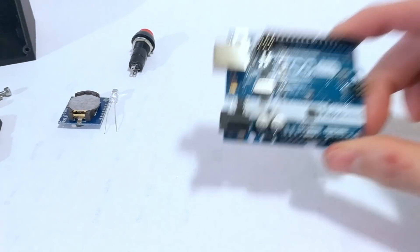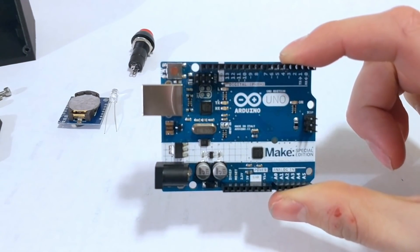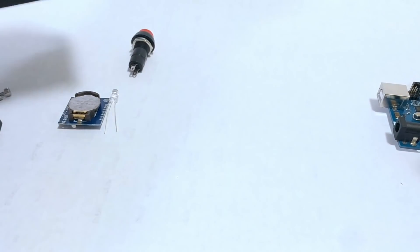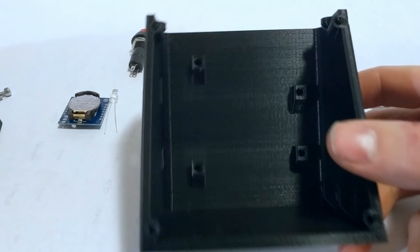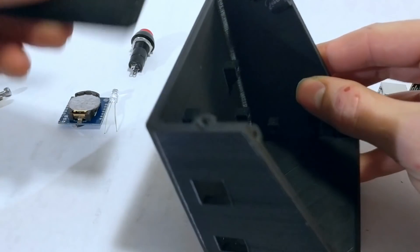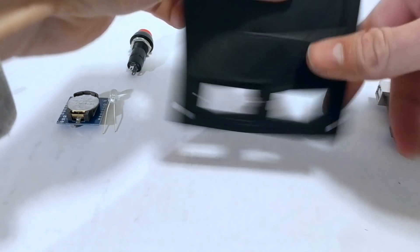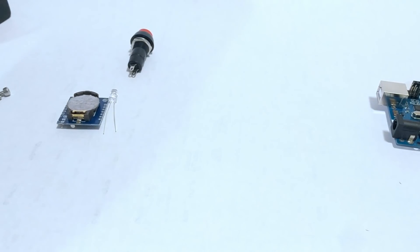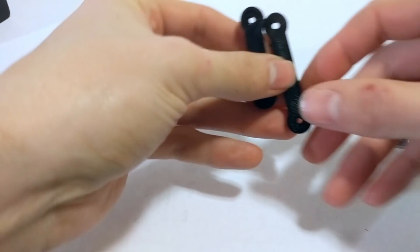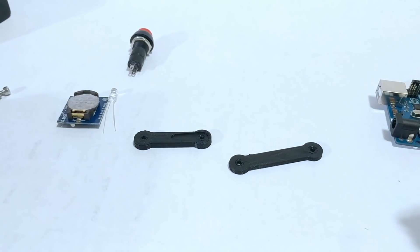For this clock you're going to need an Arduino Uno. The 3D printed parts that I will include in the description down below include the case, top for the case, front of the case, and the arms.